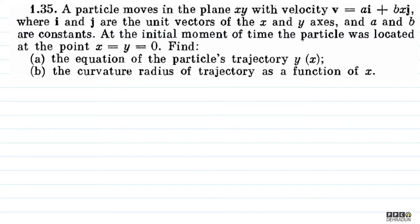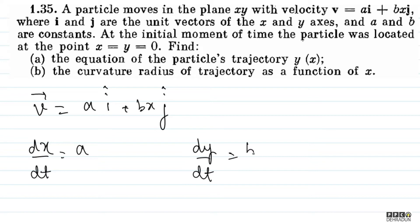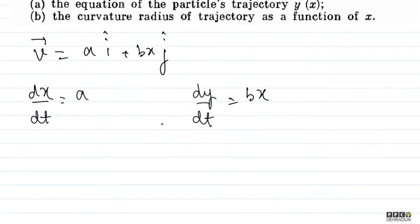Alright, let's analyze the question. The velocity vector is v = a î + bx ĵ. So the x-component of velocity is dx/dt = a, and the y-component of velocity dy/dt = bx. If we divide, we get dy/dx = bx/a, eliminating time from the approach.